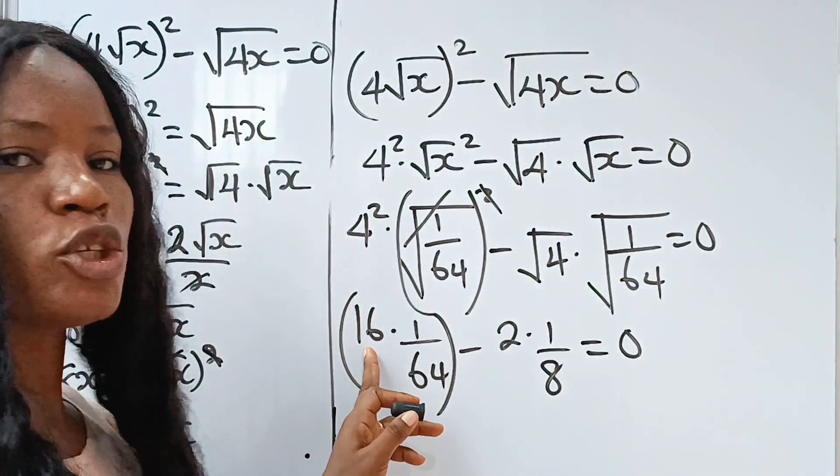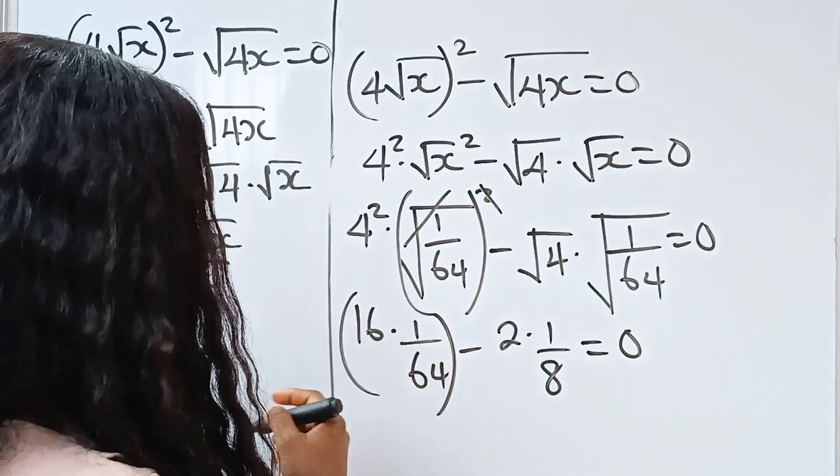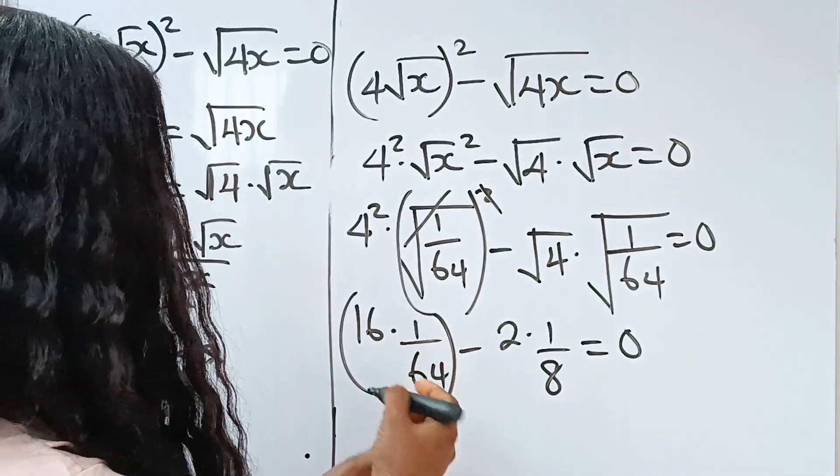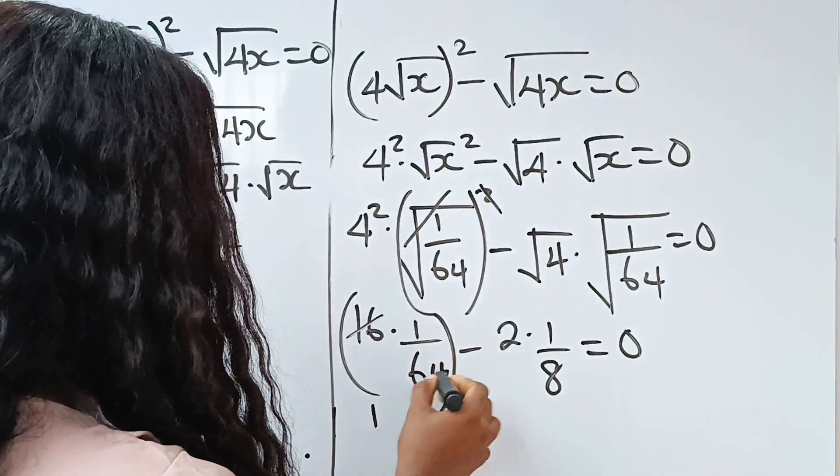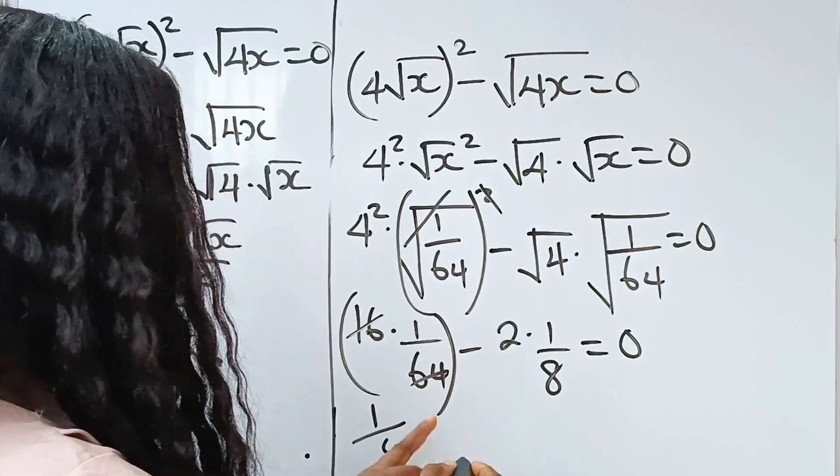Now, what do we have here? We can divide through by 4. 16 can go here. 16 divides itself 1. If we divide 64, we have 4. Minus 2 divides itself 1. If we divide 8, we have 4.